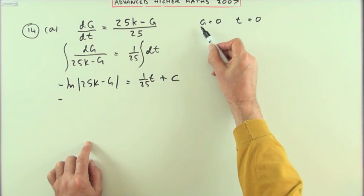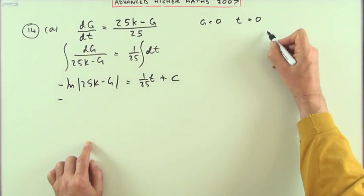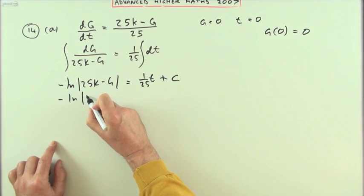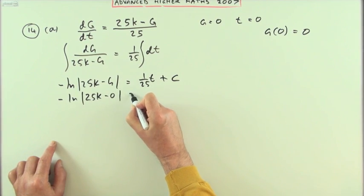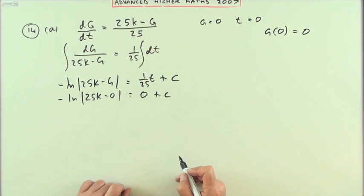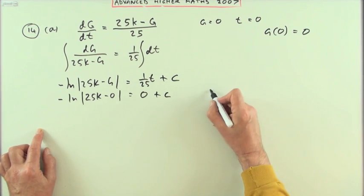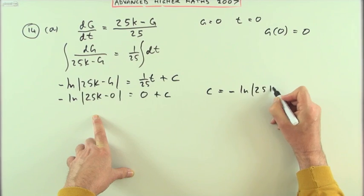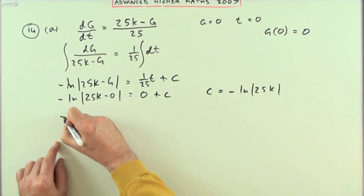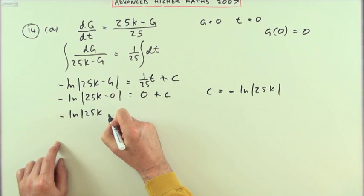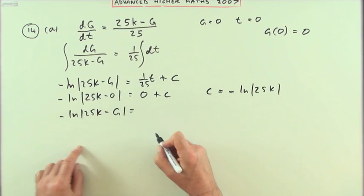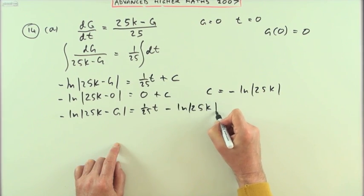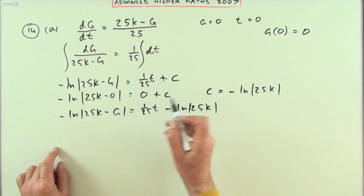So what have I got? That says the growth is zero at time zero. Another way it could have expressed that would have been g(0) = 0. So that means I've got -ln(25k - 0) = 0 + c. So c is going to be this thing. So I know that c equals -ln(25k). So putting that back in I've got -ln(25k - g) = (1/25)t - ln(25k). And I can remove those negatives quite easily just by flipping all the signs.